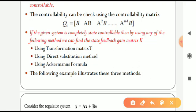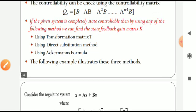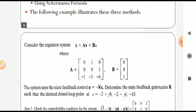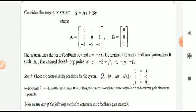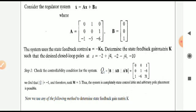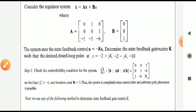The third method is Ackermann's formula — by applying that formula we are able to find the state feedback gain matrix capital K. These methods can be illustrated by means of a given example. Suppose we have a system with state space equation x-dot equal to Ax plus Bu with matrices A and B as given, and we need to design a state feedback controller with control u equal to minus Kx.